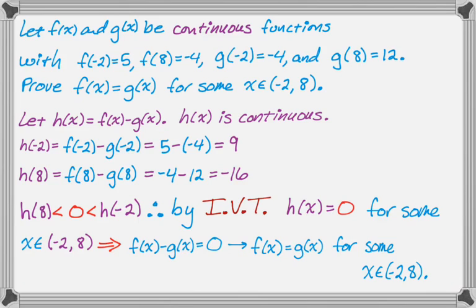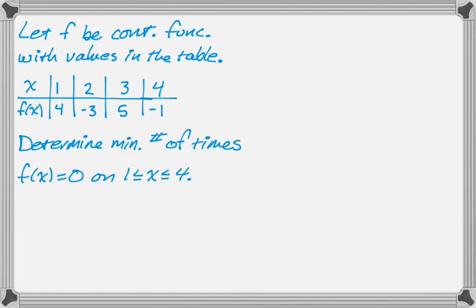Let's take a look at one more example. So, let f be continuous with values in the table. We want to determine the minimum number of times that f(x) equals 0 on the interval from 1 to 4. It's a closed interval, but it doesn't really matter. It could have been open, because we know f(1) and we know f(4), and they're not 0. So, let's see if we can do the problem.